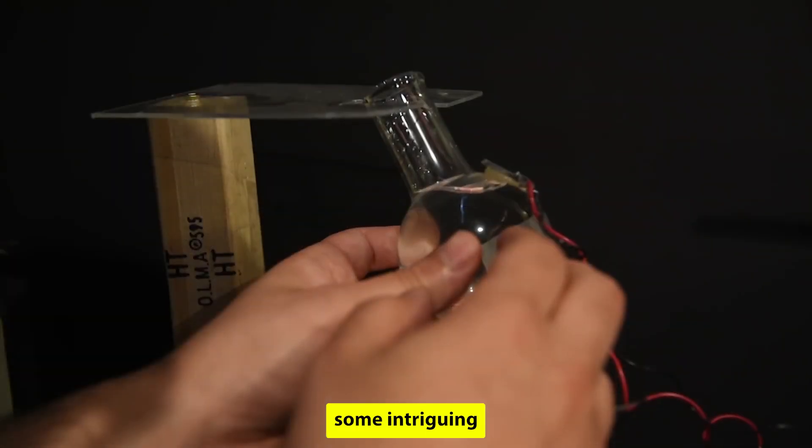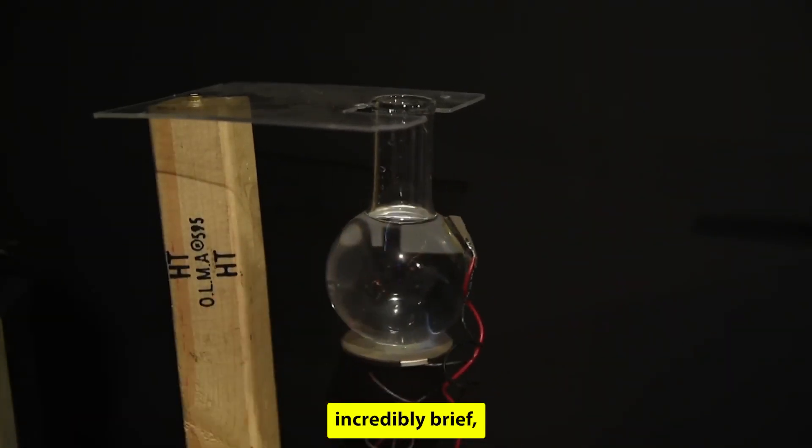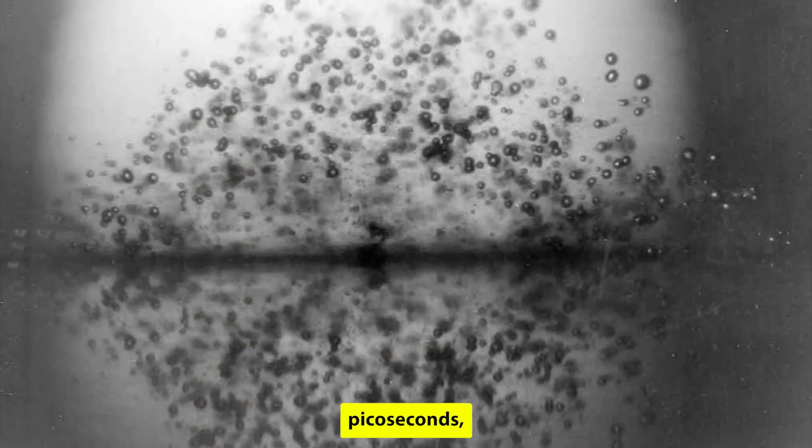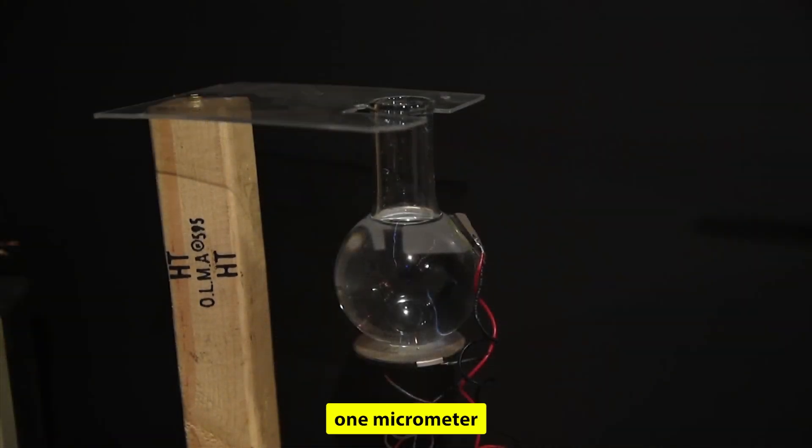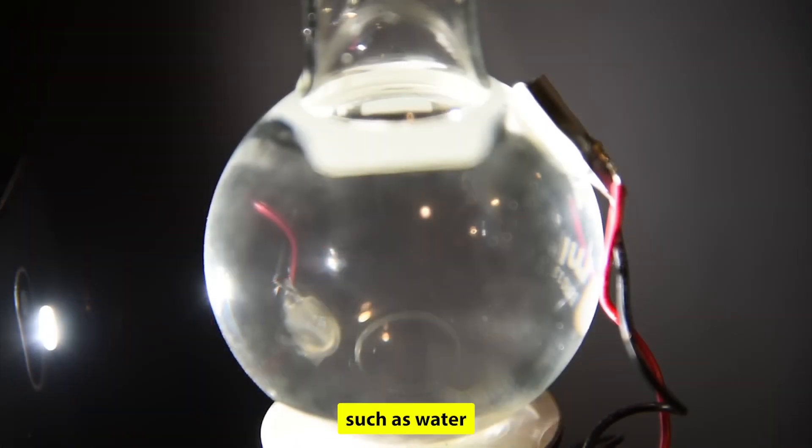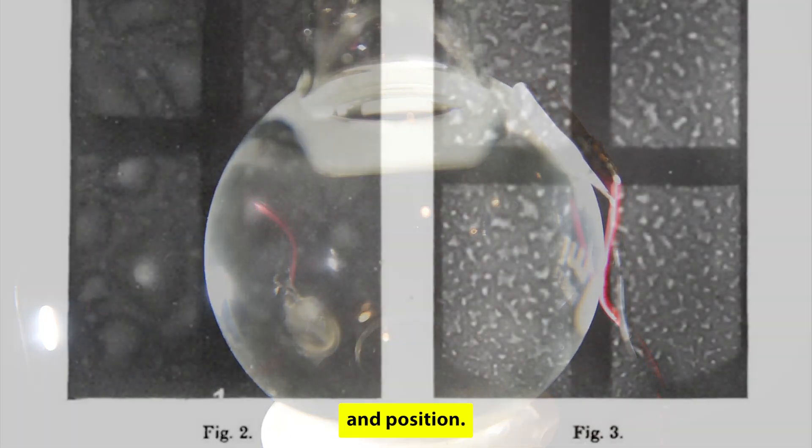Sonoluminescence presents some intriguing characteristics. The emitted light flashes are incredibly brief, typically lasting between 35 and a few hundred picoseconds, with peak intensities ranging from 1 to 10 milliwatts. These bubbles are minuscule, measuring about 1 micrometer in diameter, depending on the surrounding fluid, such as water, and the gas composition inside the bubble, often atmospheric air.